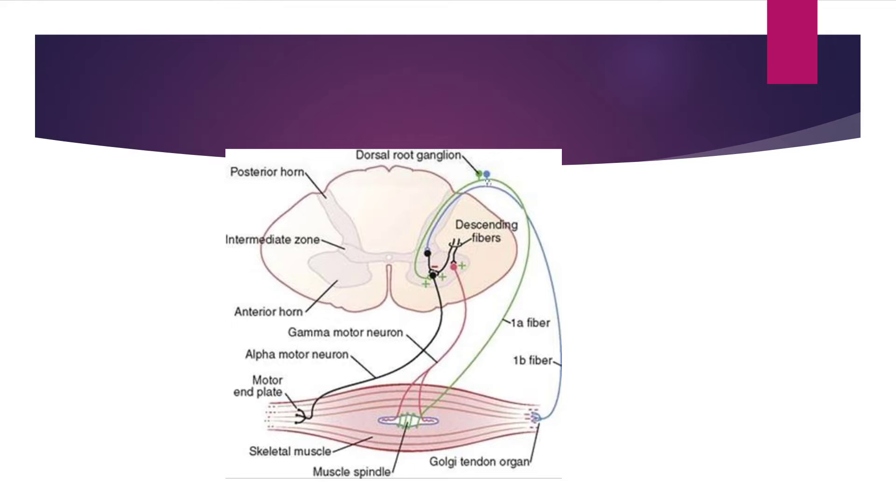Alpha motor neurons are responsible for contraction of the extrafusal fibers, and gamma motor neurons are responsible for producing contraction of the intrafusal fibers.